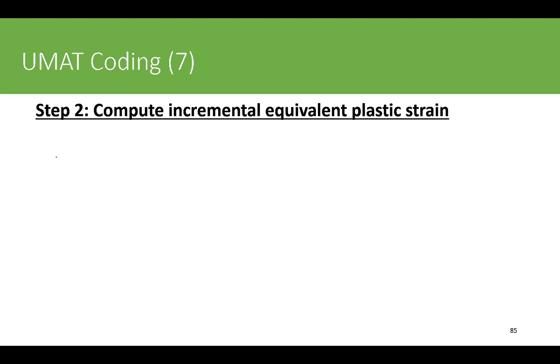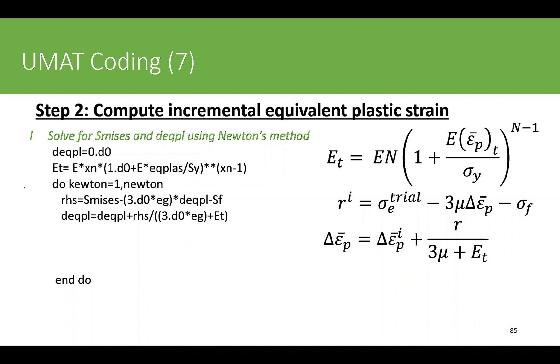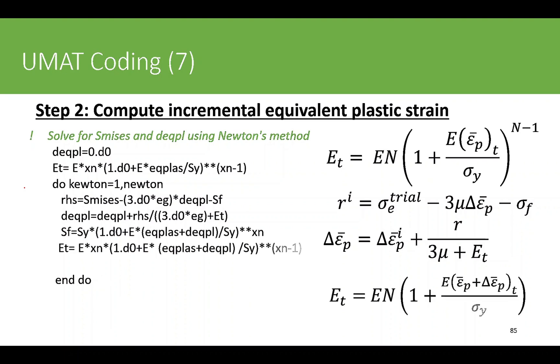Now we compute the incremental equivalent plastic strain values using Newton's method. We first initialize the equivalent plastic strain to zero, then define the tangent stiffness matrix for the plasticity part using this relationship. I use this do loop to define the residual part and then the updated value of the equivalent plastic strain increment using this formula on the right, and finally the E_t value using this relationship here.